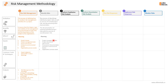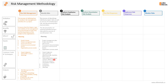Some project documents we will use include the assumption log, cost estimates, and duration estimates. We will also need the agreements and contracts already signed with vendors or third parties — procurement documentation will be a potential source for identifying project risks — along with enterprise environmental factors and organizational process assets. Tools and techniques include expert judgment, data gathering techniques like brainstorming sessions, checklists, and interviews, data analysis techniques like root cause analysis, SWOT analysis (strengths, weaknesses, opportunities, and threats), document analysis, assumption and constraint analysis, facilitation, prompt lists, and meetings.